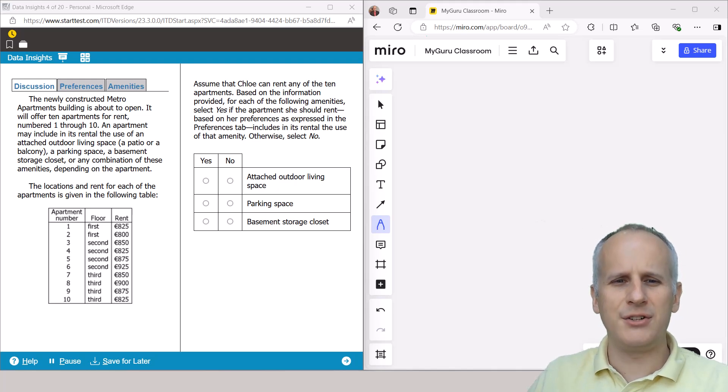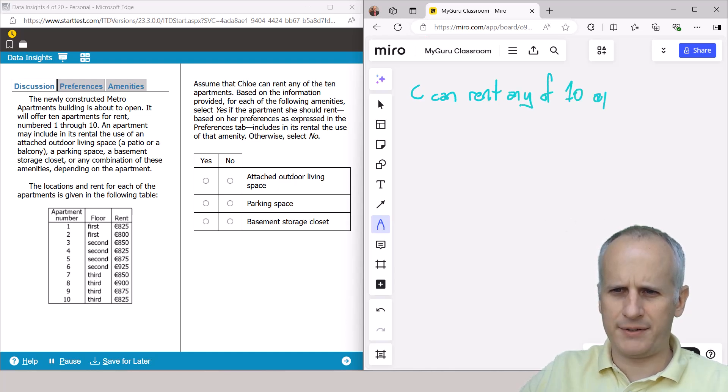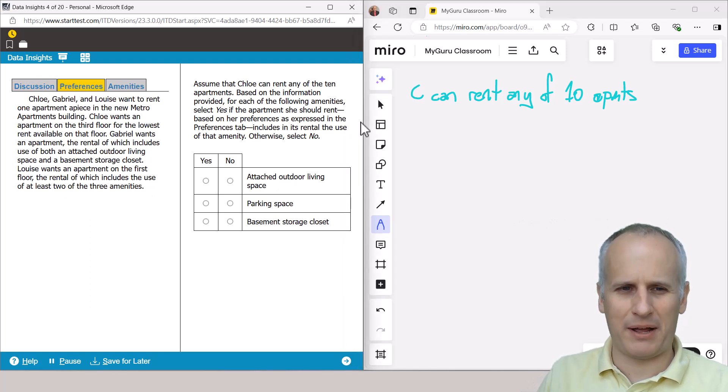So we read on the right hand, assume that Chloe can rent any of the 10 apartments. So C can rent any of the 10 apartments. So I just write that down so I don't lose sight of it. Based on the information provided for each of the following amenities, select yes if the apartment she should rent based on her preferences as expressed in the preferences tab includes in its rental the use of that amenity. So we got to go to the preferences, and I don't really even care about the prior tab, at least to this point.